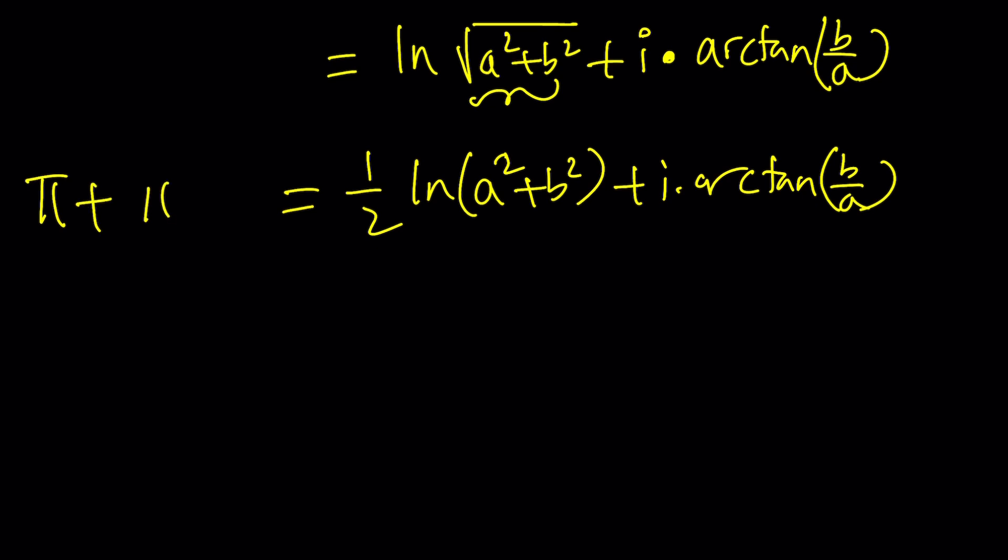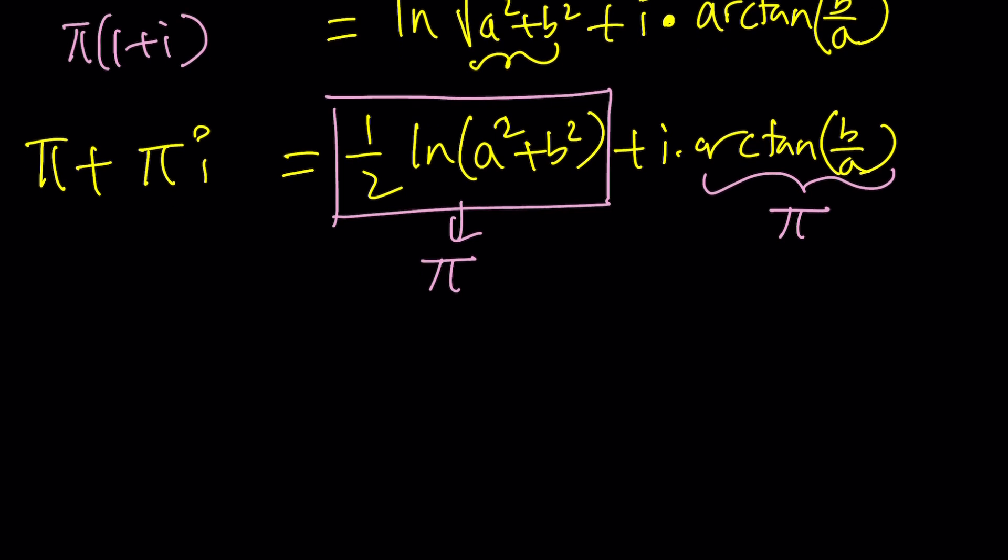You know why this is so nice? Because we can compare the real parts and imaginary parts. This is the real part, so this should equal π. And this is the imaginary part that should also equal π because we have a complex number whose real part equals its imaginary part, like 1 + i or any multiple of 1 + i. By the way, you could also write this as π times (1 + i).